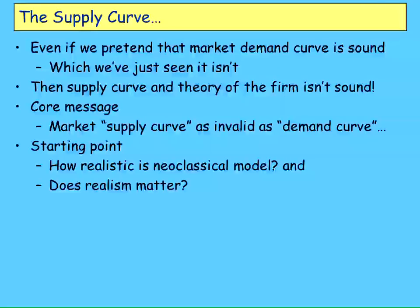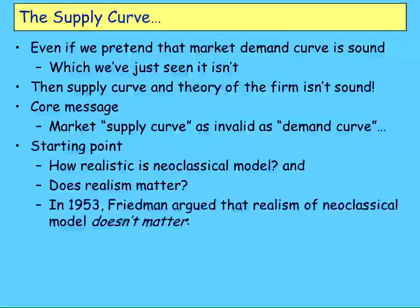A major defense that neoclassical economists make against critics is about realistic assumptions. They respond by saying: do you want us to have realistic assumptions? Okay, then maps have to include the color of the grass as you go past, otherwise they're not valid. They're saying we've got to assume there's no grass on the side of the road — meaning realism doesn't matter.